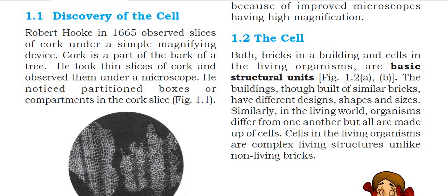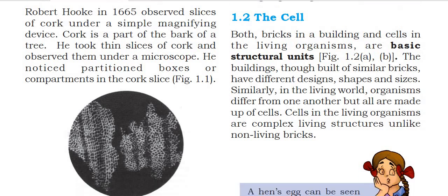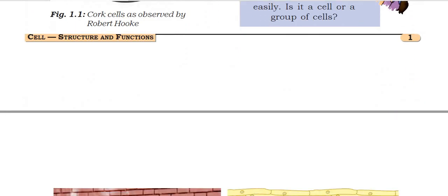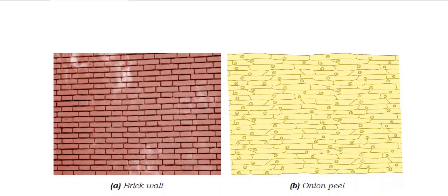Both bricks in a building and cells in living organisms are basic structural units. If we want to construct a building, we first construct a wall. Similarly, bricks are arranged in a systematic order to form a wall.